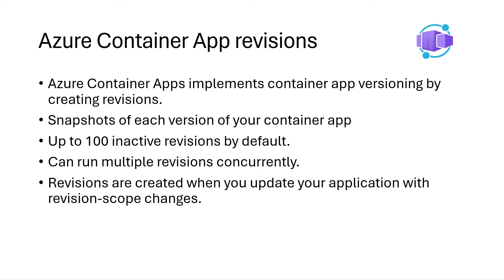Azure Container Apps implements container app versioning by creating revisions. A revision is a mutable snapshot of a container app version, and you can use revisions to release new versions of your app or quickly revert to an earlier version. New versions are created when you update your application with revision scope changes. You can control which revisions are active and the external traffic routed to each active revision. Revision names are used to identify a revision and appear in the revision's URL, and you can customize the revision name by setting the revision suffix yourself.